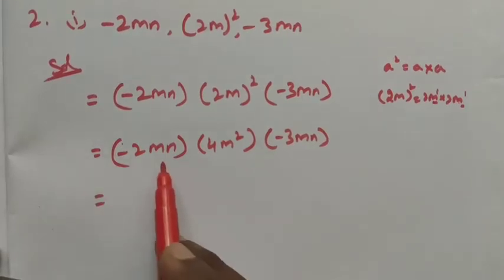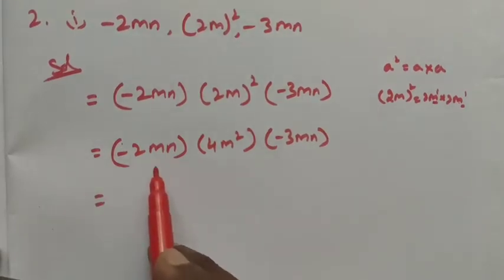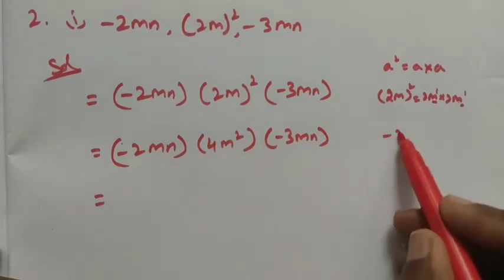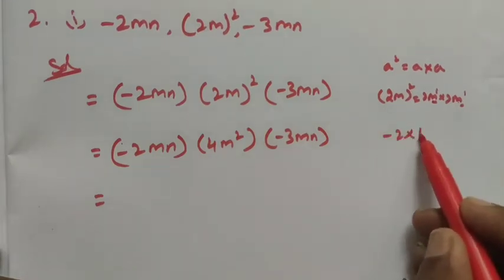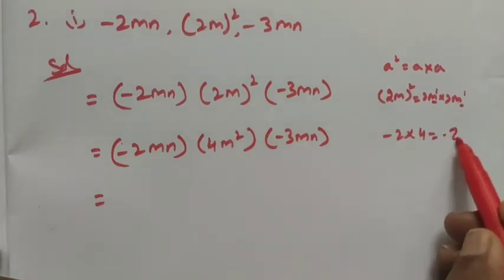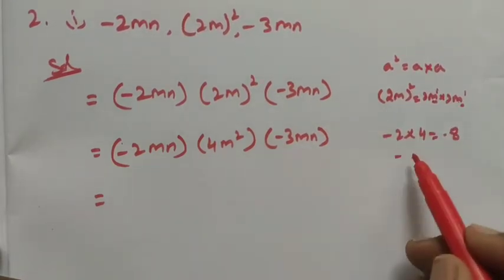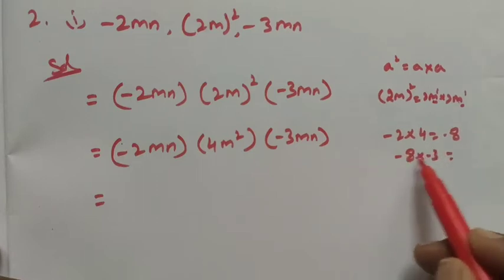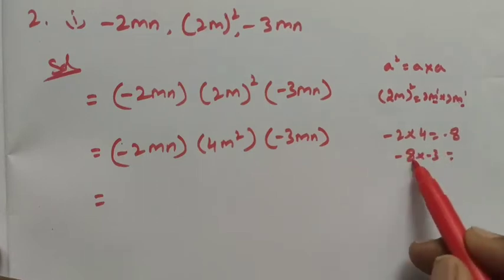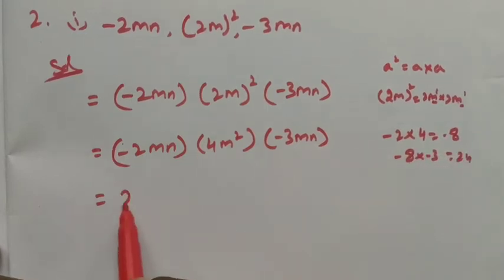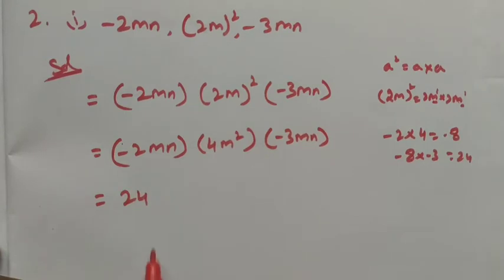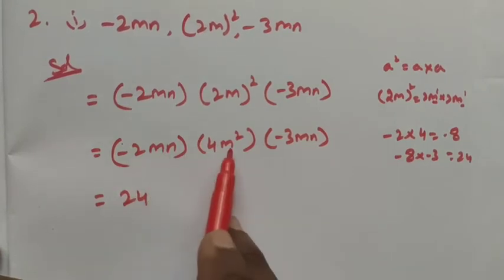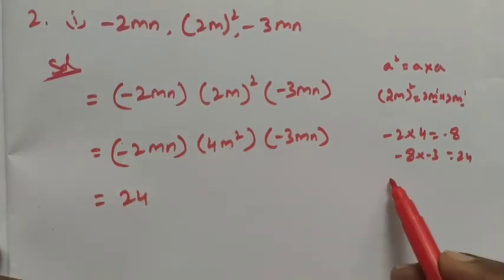Now we multiply the numerical factors. Minus 2 into 4 is minus 8. Then minus 8 into minus 3: minus times minus is plus, so that gives us 24.